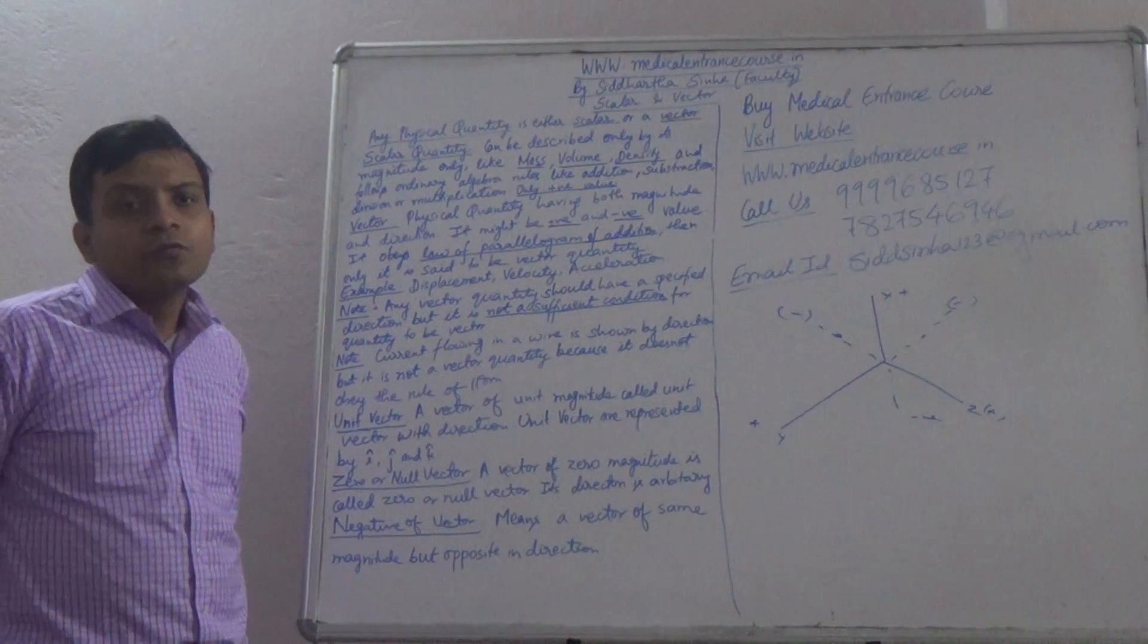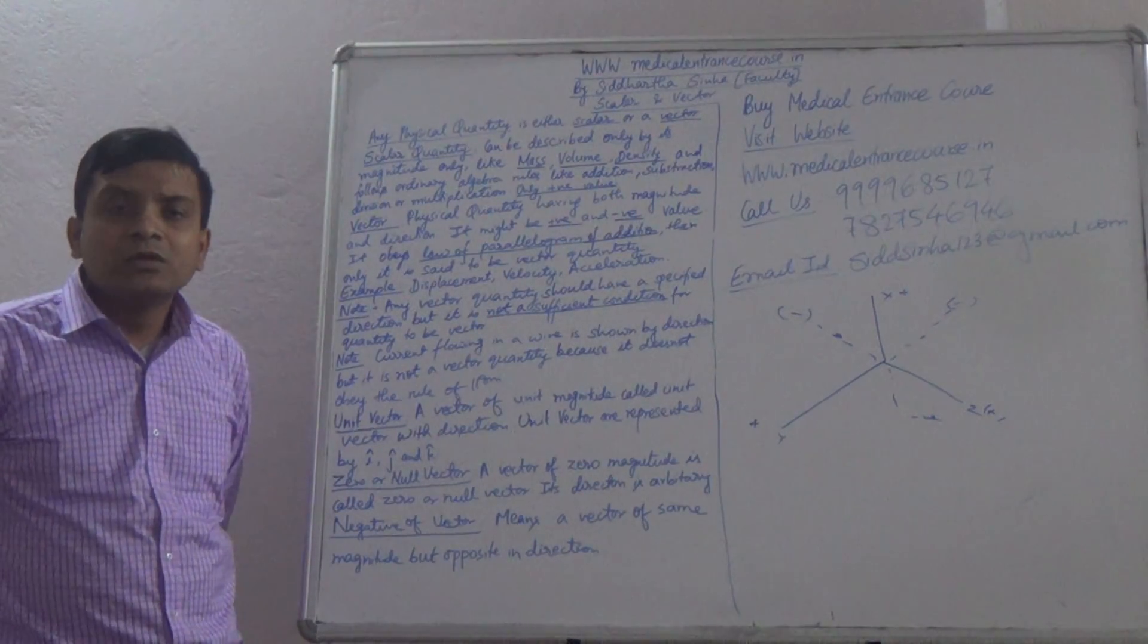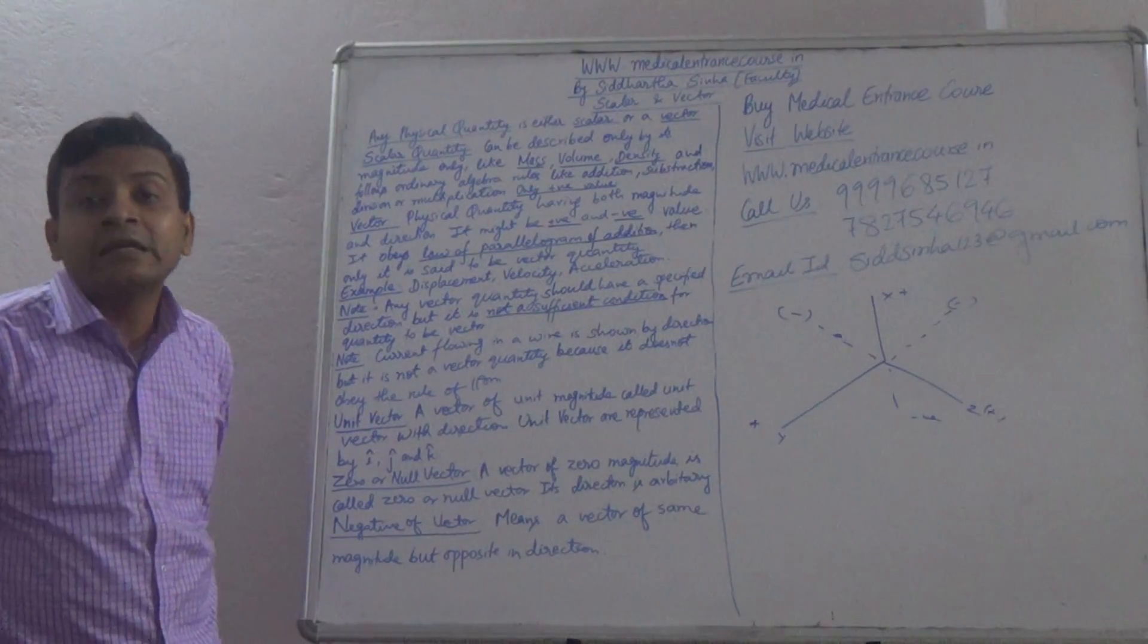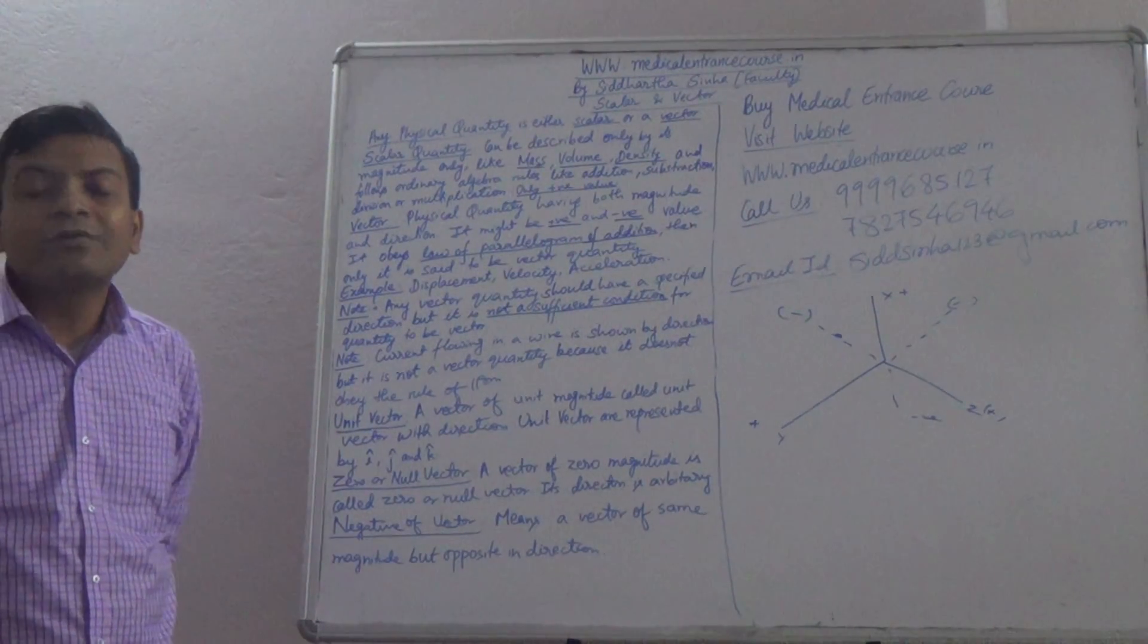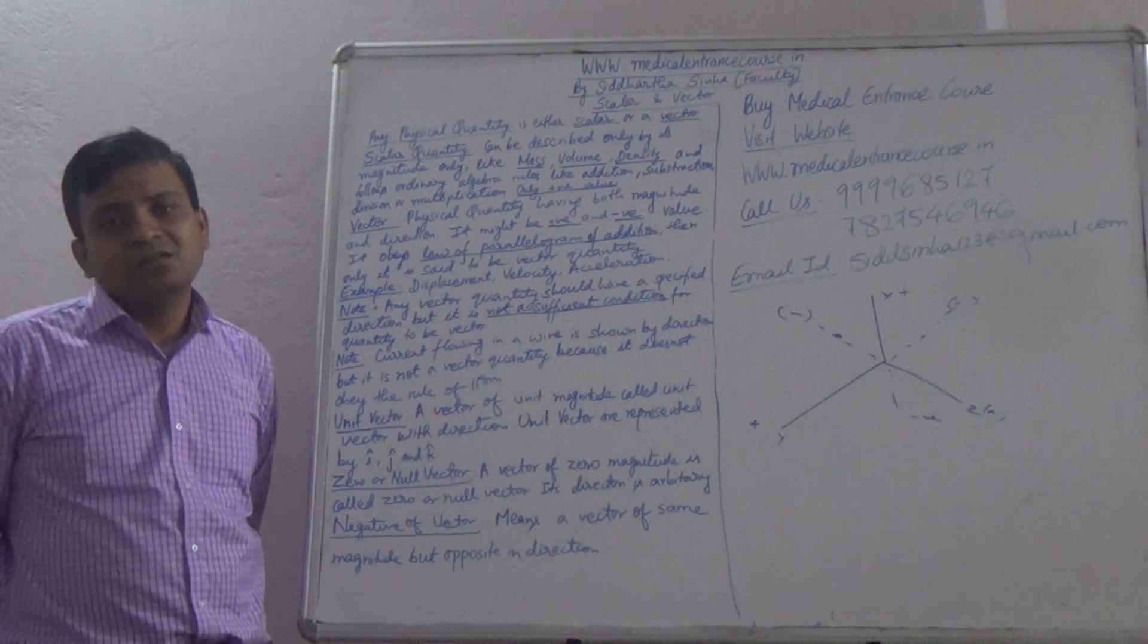Zero or null vector. Wherever the magnitude is zero, the direction of that physical quantity becomes arbitrary or random. It doesn't know its own direction. So that is known as null vector or zero vector.